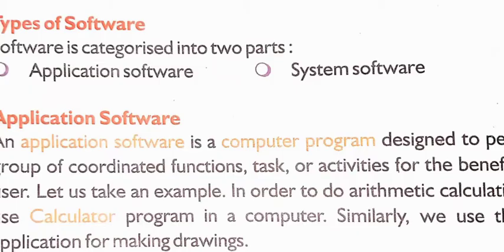Next — types of software. There are two types of software: application software and system software. Application software is a computer program designed to perform a group of coordinated functions, tasks, or activities for the benefit of the user.